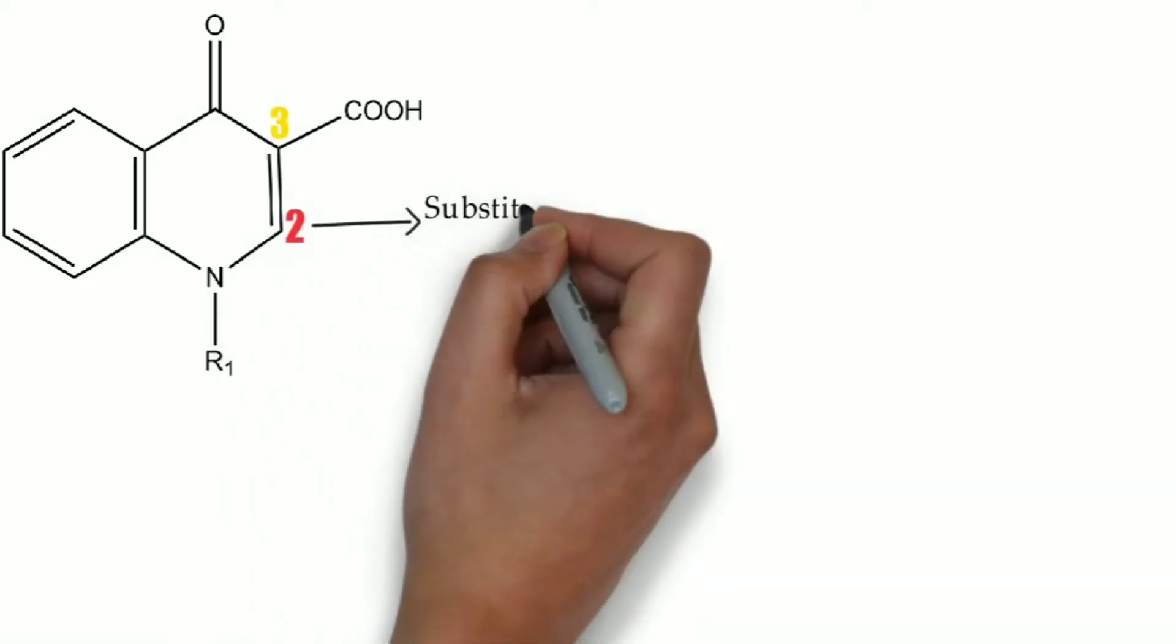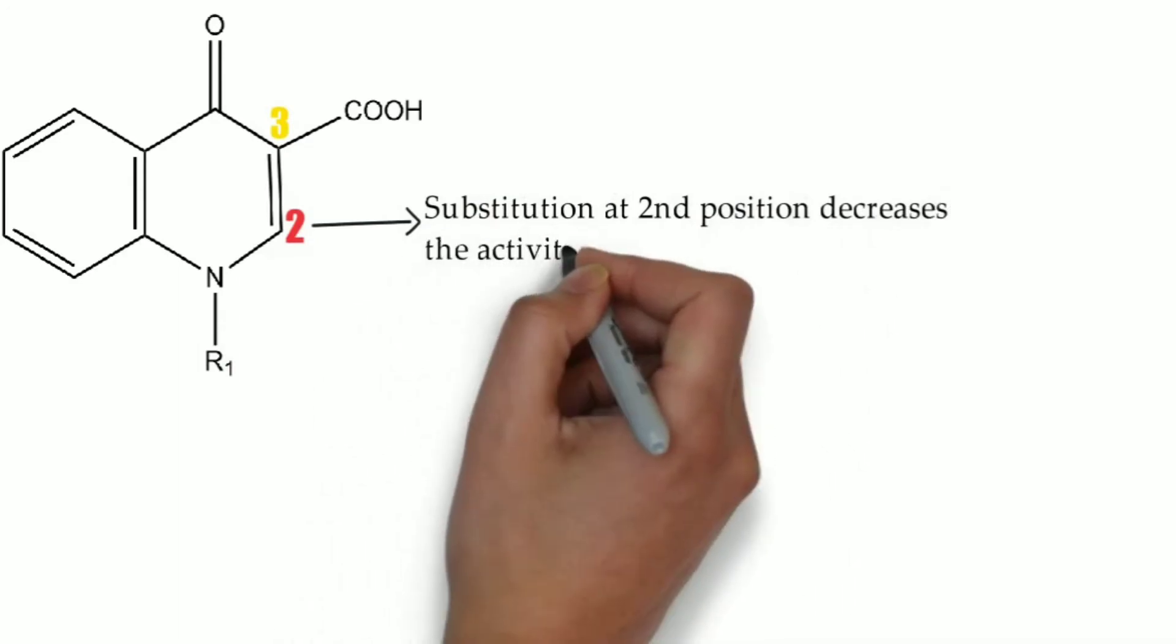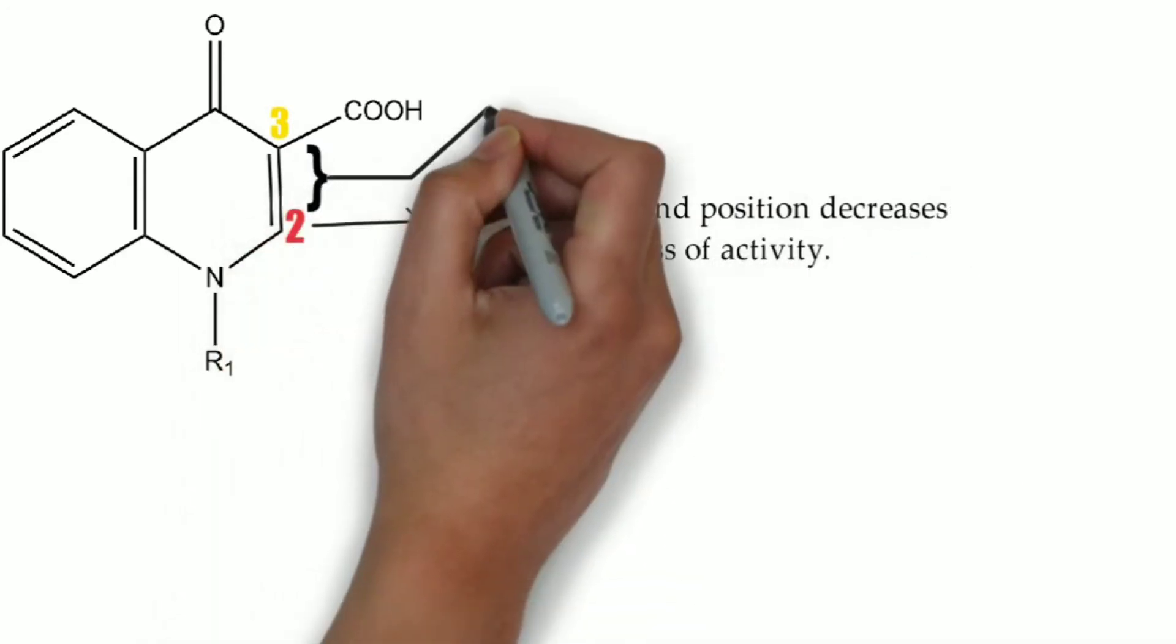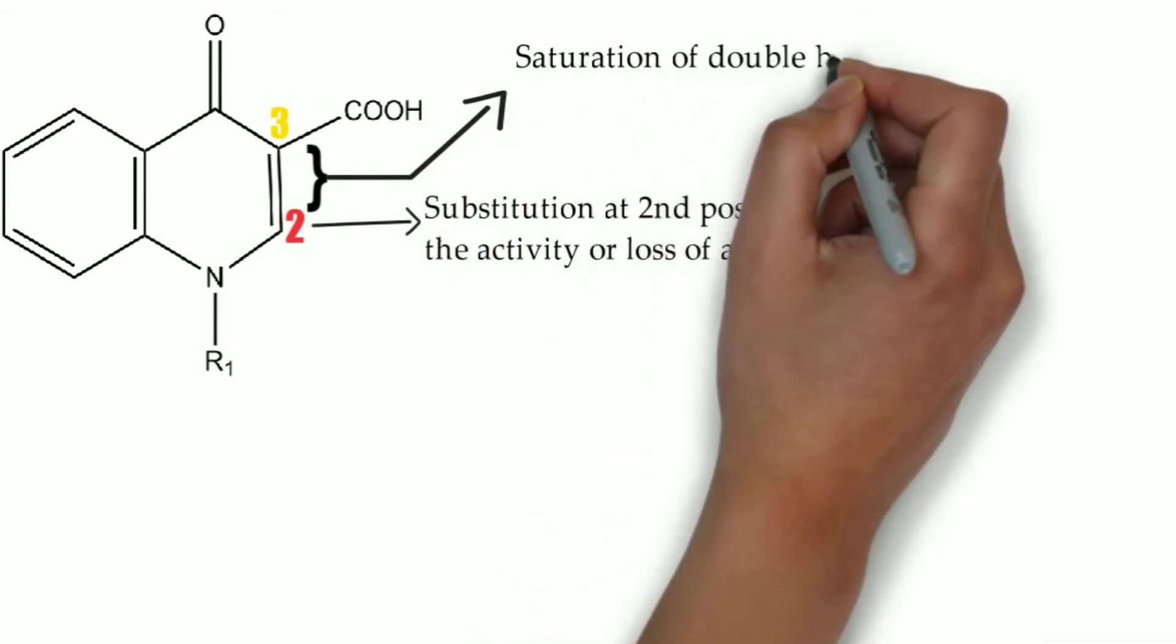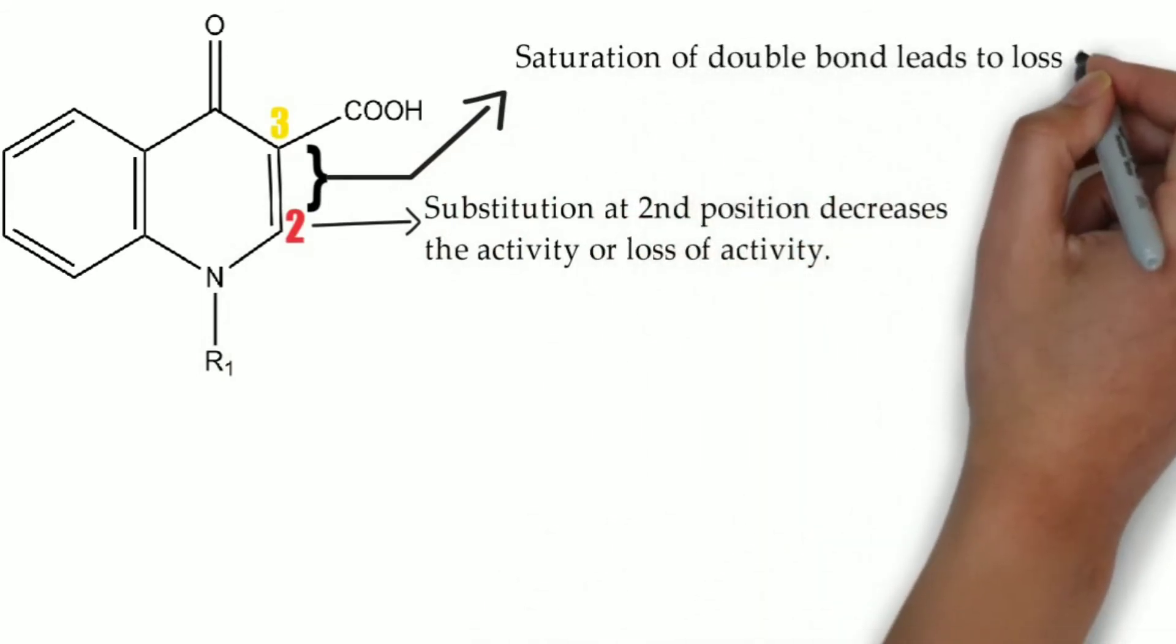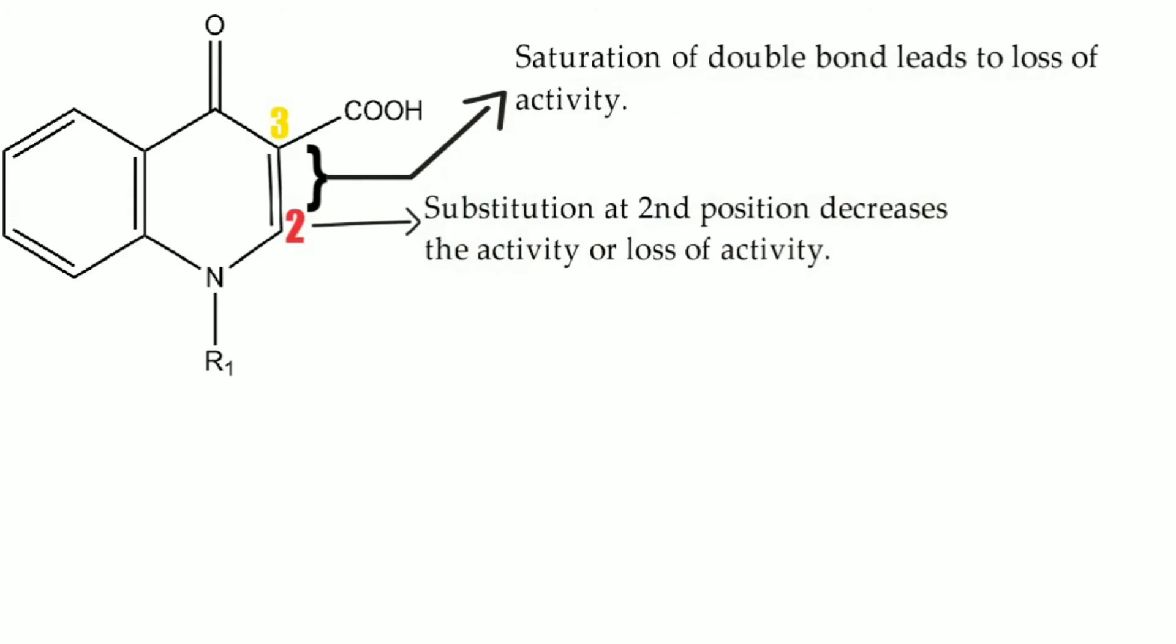If we see the second position of the ring, substitution should not be there at second position as it will lead to loss of activity. We see the second and third position. In between the second and third position, some unsaturation is there. If we saturate that unsaturation, it will lead to loss of activity.